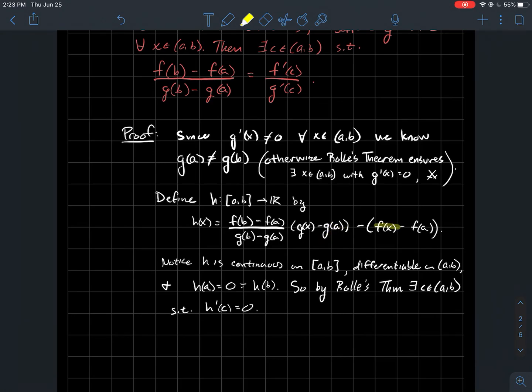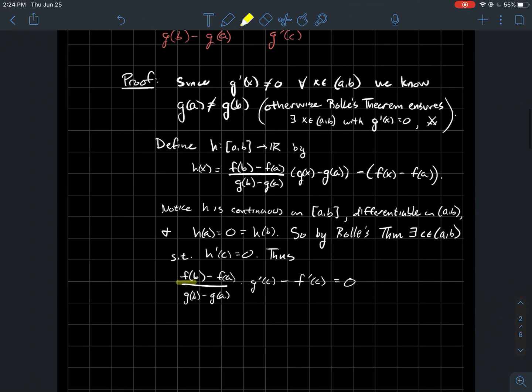Similarly, over here, this turns into f prime, and then this would go away. So if you plug c in, all that happens is you get this good stuff times g prime of c, minus f prime of c, when you differentiate. And so that is this formula right here.